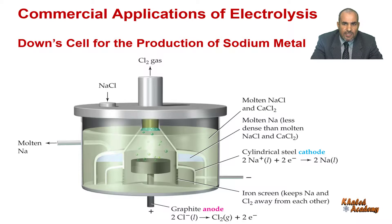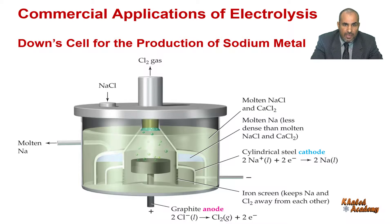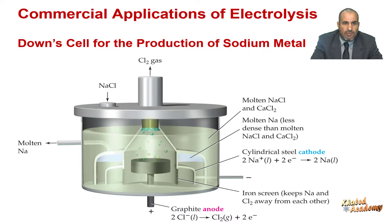Because the Down cell process requires high current, typically in the range of 25,000 to 40,000 amperes, plants for producing sodium are located near sources of inexpensive hydroelectric power.